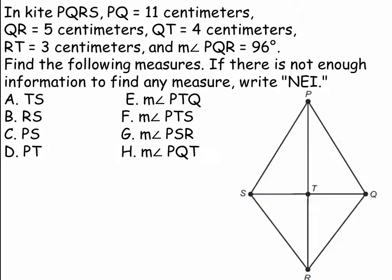Now, kite PQRS: PQ is 11 centimeters, QR is 5, QT is 4, RT is 3, and the measure of angle PQR is 96 degrees. I like to go ahead and mark up what I can because that's what will help me answer. So I've got 11 centimeters for PQ, QR is 5 centimeters, QT is 4 centimeters, RT is 3 centimeters, and angle PQR is 96 degrees — that's the whole angle, not just part of it.